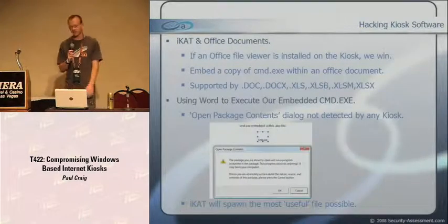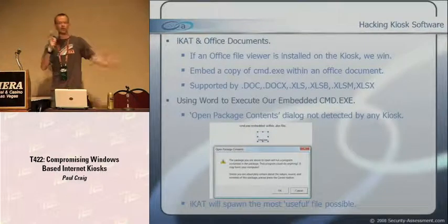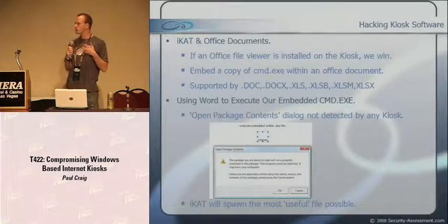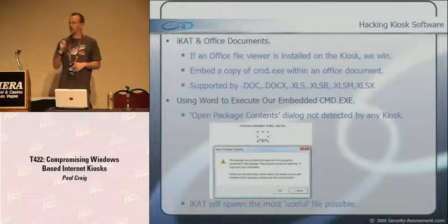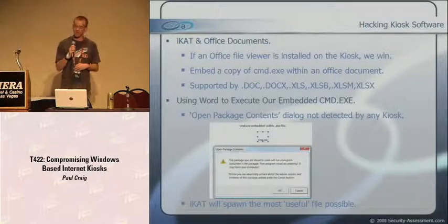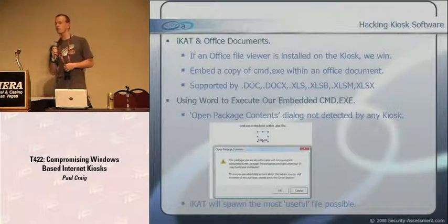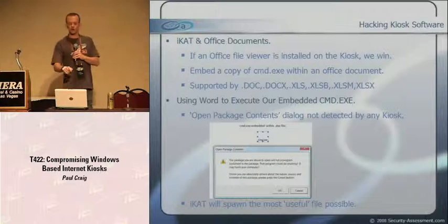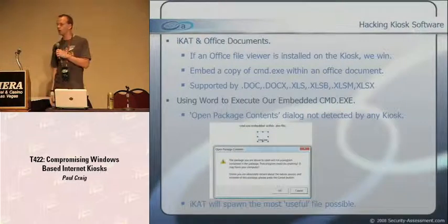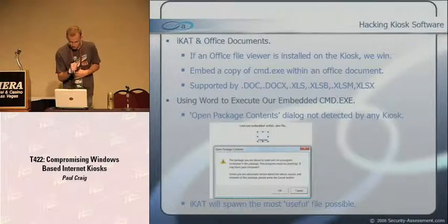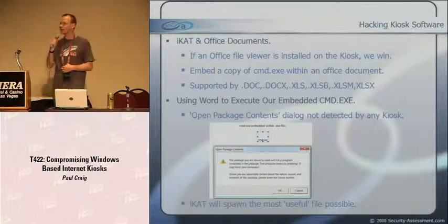If you have an Office file viewer installed on a kiosk, you pretty much win - because in an Office document you can embed an object, and you can embed an executable like CMD. iKAT has .doc, .docx, .xls, .xlsb, .xlsm, and .xlsx files that all contain embedded CMD files. If you use the iKAT file handler invocation trick and Office pops up, you get a document containing cmd.exe embedded within it. Double-click it, the 'open package contents' box pops up warning that 'this package will run a program that could do anything and may harm your computer.' Well, I don't really care about the kiosk.